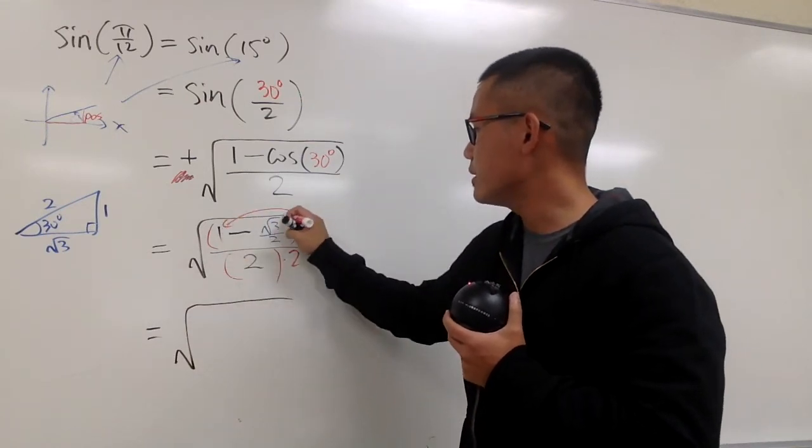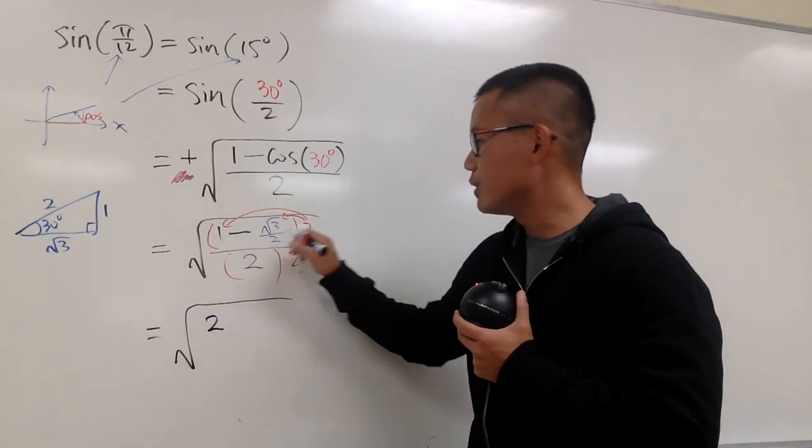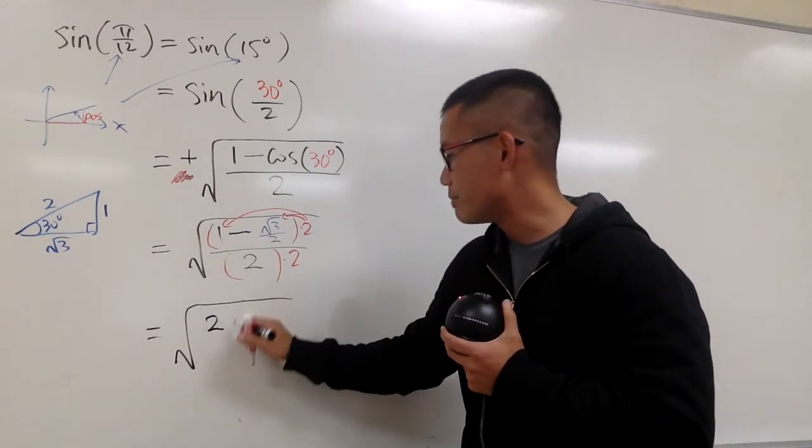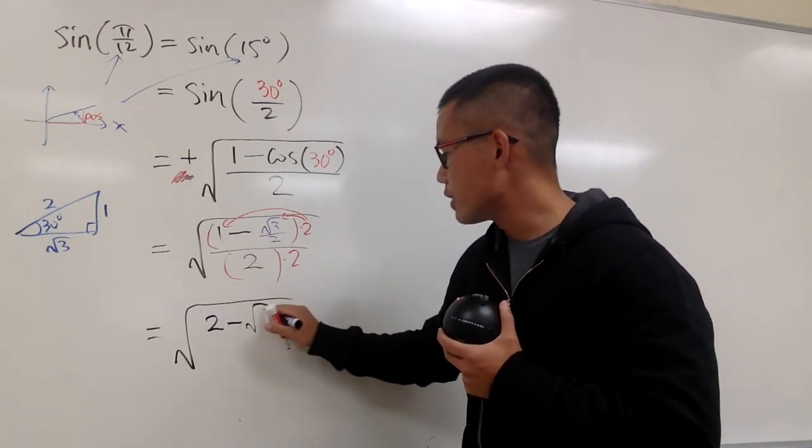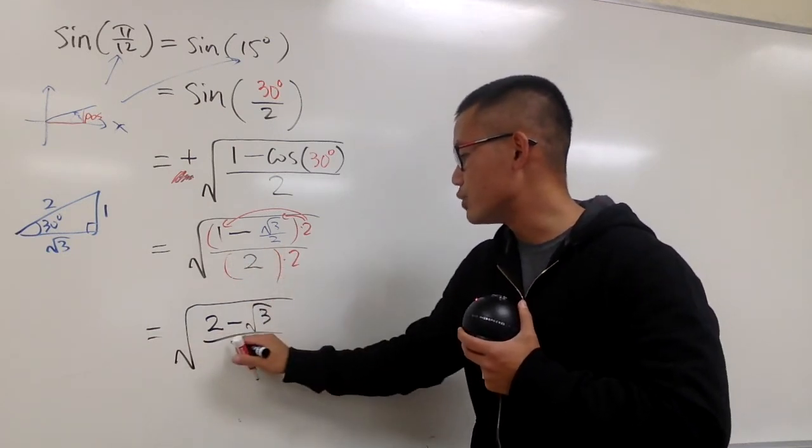And we will end up having, this is the big square root, and then distribute this. 1 times 2 is just 2, and then this 2 and that 2 will cancel each other out, so we just have minus square root of 3, and then the bottom is just going to be 2 times 2, which is 4.